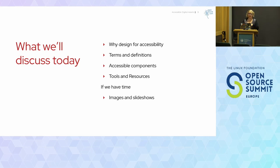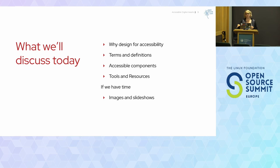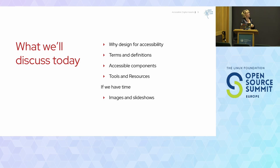So why are we here today? We're going to talk about a couple of things. Obviously accessibility, but the first thing I want to explain is why we want to design and code for accessibility, especially in our open source projects. I'll go over some terms and definitions, since this is a primer. And then we'll go over some accessible components, tools, and resources. If we have time we'll talk about images and slideshows because I have a lot of opinions about those.